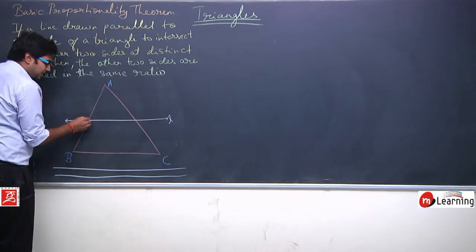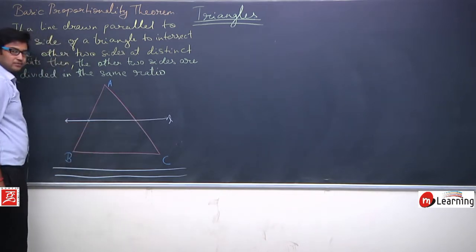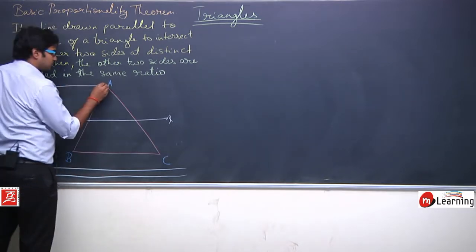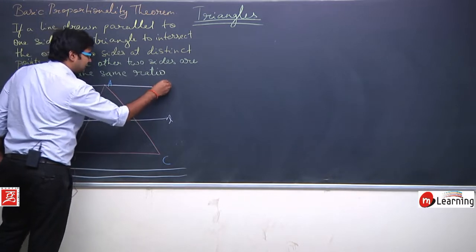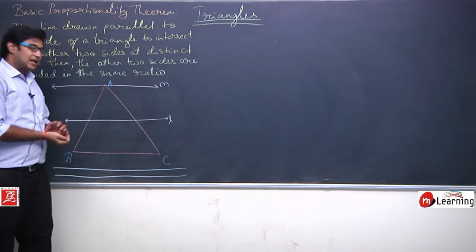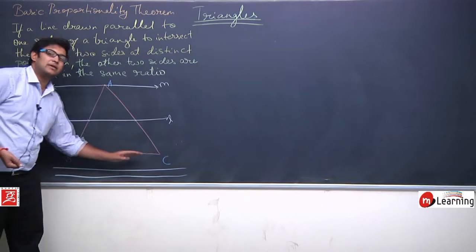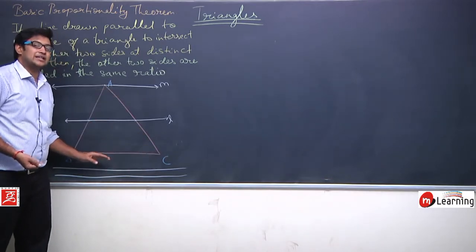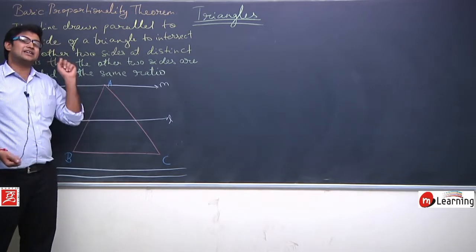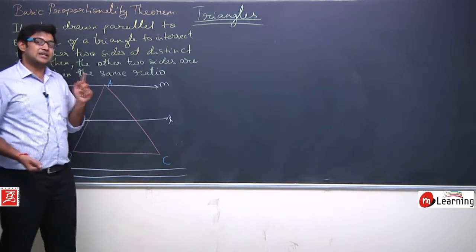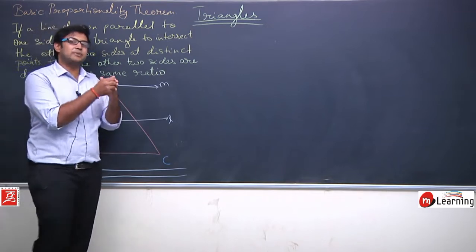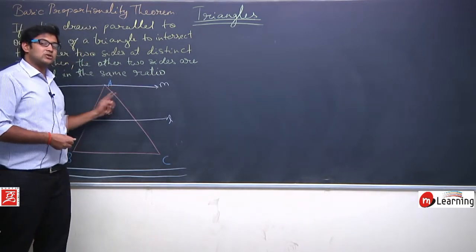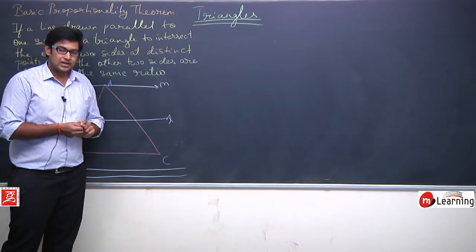This line L is parallel to BC and it is intersecting the other two sides at two different points. Similarly, I can draw another line M, also parallel to BC. But line M is intersecting the two sides at point A, which is where both sides meet.